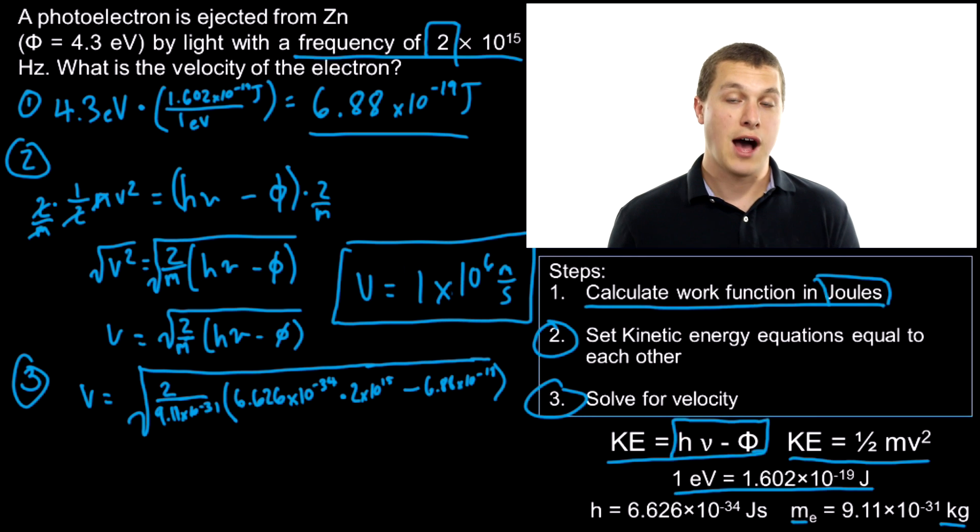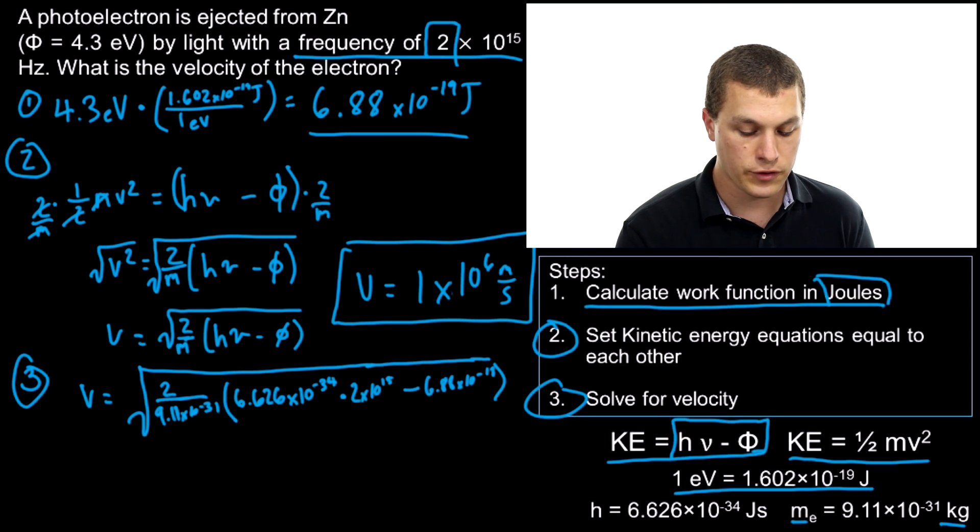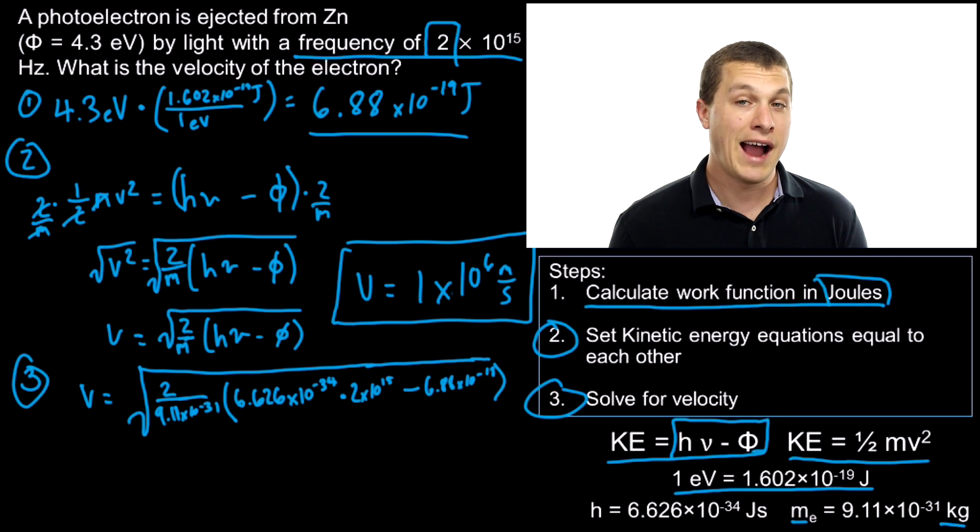Our electron shoots off of that metal moving really quickly, about a million meters per second. That tells you how high speeds these electrons are moving at. A few notes here: This is a relatively simple version of this problem. Sometimes you can have velocities that are even higher, and if you have velocities that are really high, you can start to actually have to use relativistic equations.